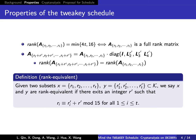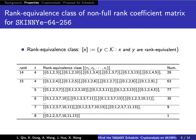We find that some A corresponding to different indexes have the same rank, so we introduce the rank-equivalent property and define the rank-equivalent classes. We find that when T is greater than or equal to 4, certain sets of indices will lead to a non-full rank coefficient matrix. We then count all different rank-equivalent classes of non-full rank.